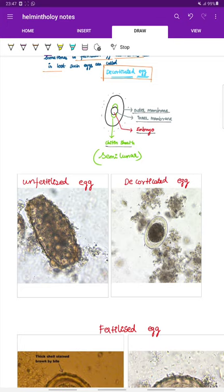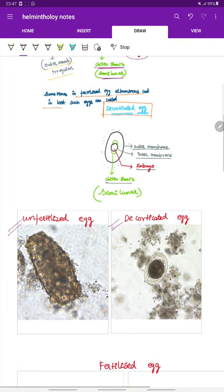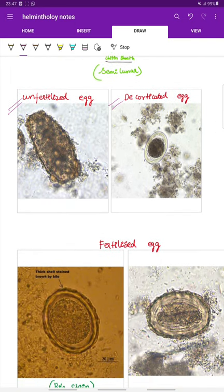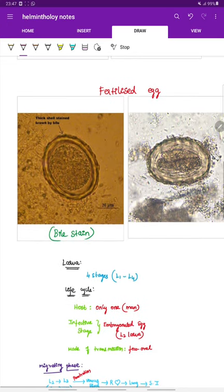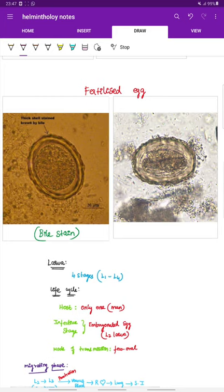This is a bile stained image showing the eggs of Ascaris Lumbricoidus. This is the unfertilized egg and this is the decorticated egg containing an atrophied embryo. Next, this is the image of the fertilized egg which is bile stained.